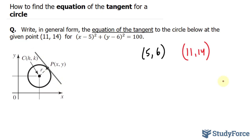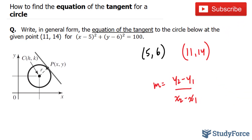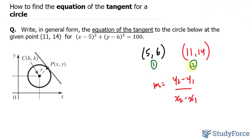The slope of the line r, which we'll denote as m, has the formula y2 minus y1 over x2 minus x1. This point is our first point and this is our second point. It doesn't matter which one you call your first or your second, just as long as you're consistent. Since I call this my second point, this will be my y2, this will be my x2, y1, and x1.